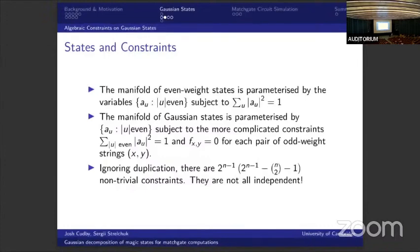Why are we interested in this? The manifold of all even weight states is simply parametrized by all the variables a_mu — very simple. Whereas the manifold of Gaussian states is parametrized by all these complicated constraints — we have loads of them, but ignoring duplication there is a nasty combinatorial number of non-trivial constraints. This is too many constraints — if they were all independent, we wouldn't have any Gaussian states. But we know it is possible to prepare states from matchgate circuits, so clearly not all these equations are independent.